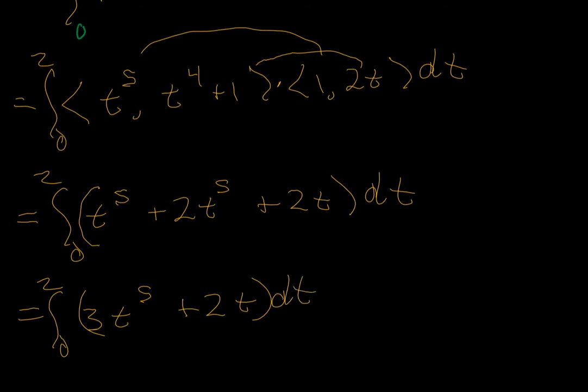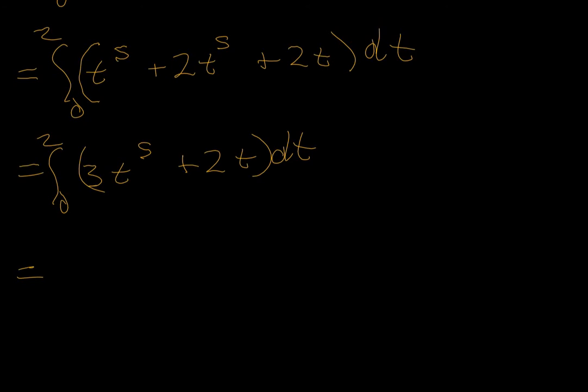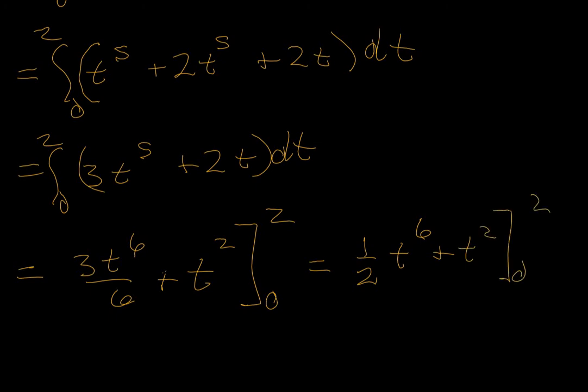And the antiderivative is 3t⁶ over 6 plus t² from 0 to 2. 3 over 6 reduces to 1 half. So we get (1/2)t⁶ plus t² from 0 to 2. 2⁶ is 64. Half of that is 32. t², 2² is 4. When you substitute 0, you get 0. But this adds up, my students, to 36. And I think you'll find 36 is what we had before.